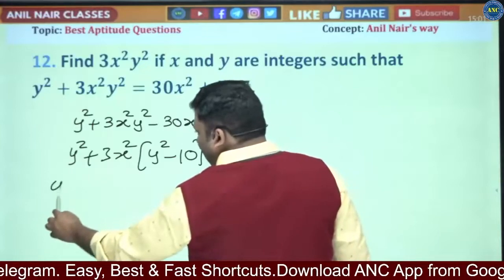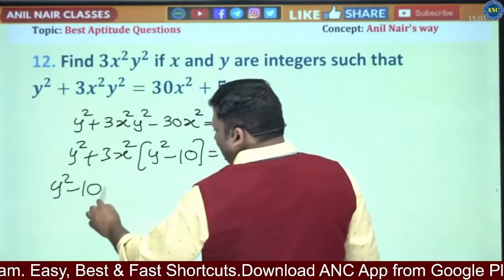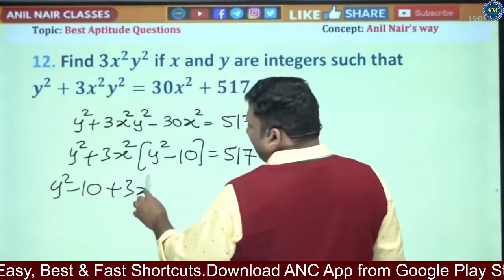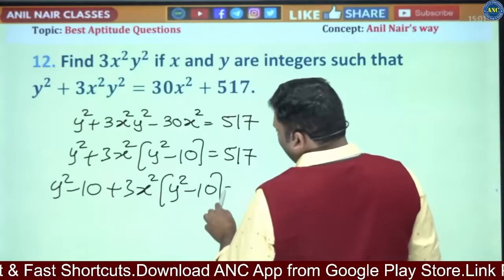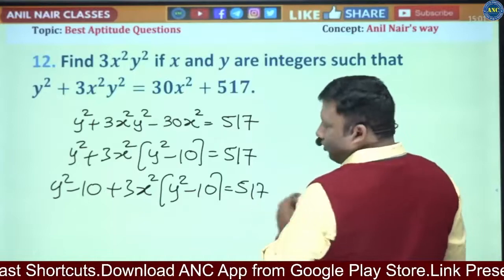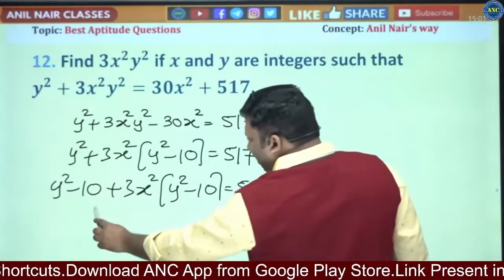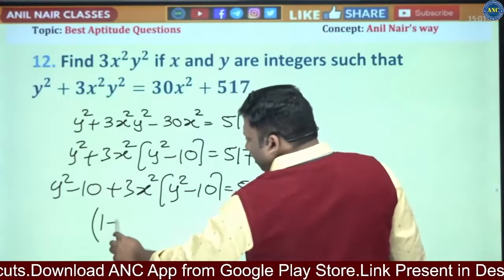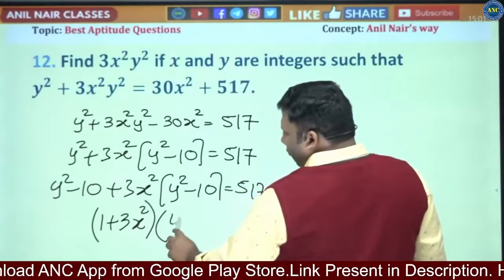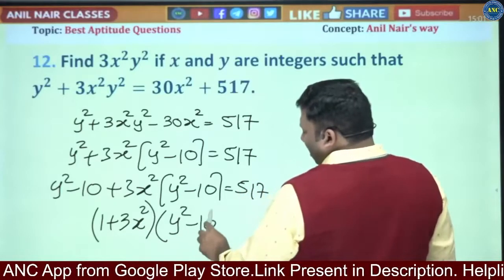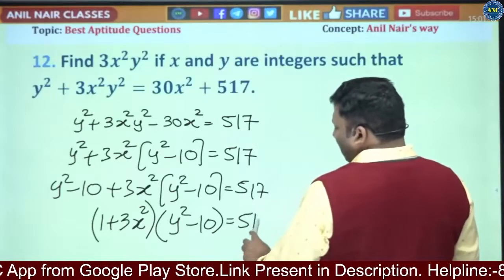So y² - 10. I will add -10 on left hand side and right hand side. 3x² into y² - 10 equivalent to 517. I got it as a product of two terms: 1 + 3x² into y² - 10 is equivalent to 517.